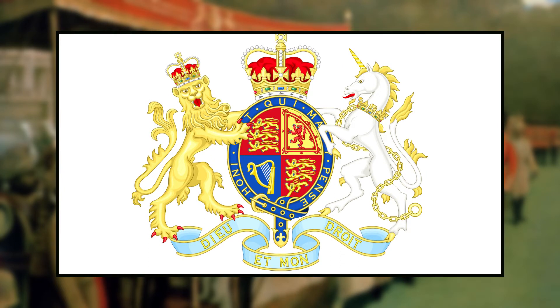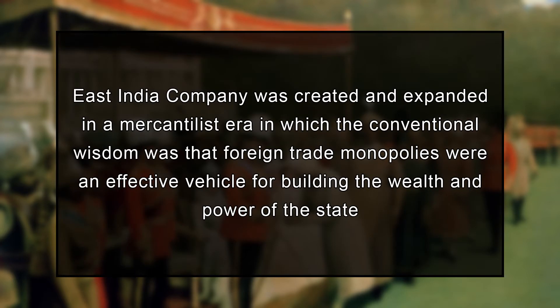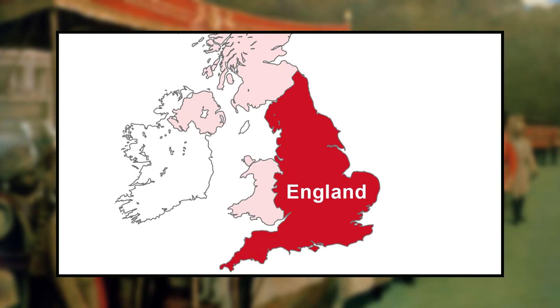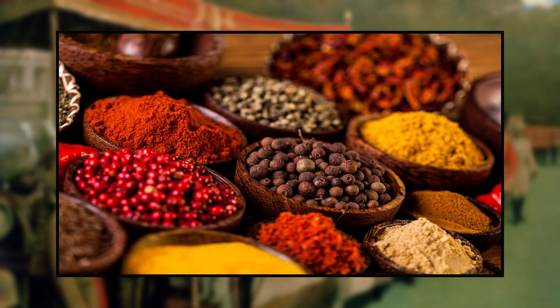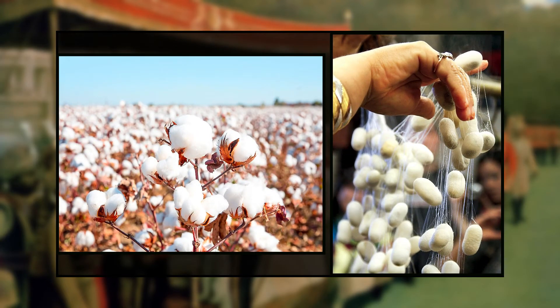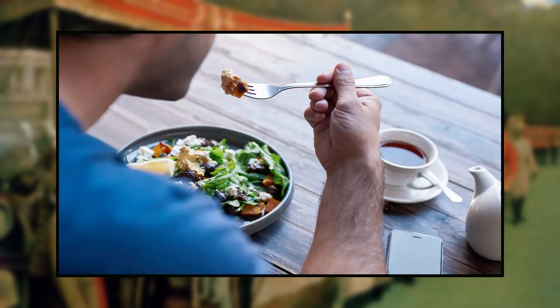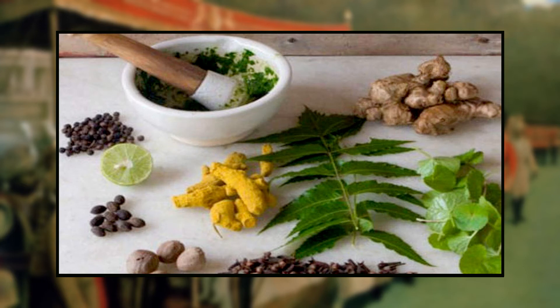Though the East India Company acted as a private joint-stock company, it was granted a special provision of limited liability by the Crown. Although the British government neither held ownership of shares nor directed the company's activities, the East India Company was created and expanded in a mercantilist era in which foreign trade monopolies were considered an effective vehicle for building the wealth and power of the state. The import into England and re-export to Europe of spices and goods such as cotton and silk from the East was a lucrative business in the 17th century. Spices like pepper, clove, mace, cinnamon, and ginger were used to improve food taste or for making medicines and had a huge market in Europe.